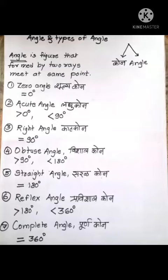Angle and Types of Angle. Angle is a figure that is formed by two rays meet at same point. There are following types of angles.